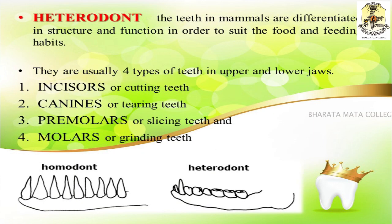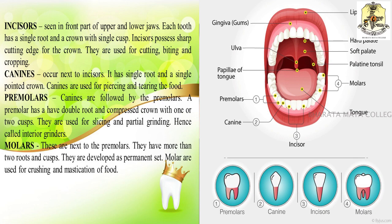Heterodont dentition means the teeth in mammals are differentiated in structure as well as function in order to suit their food and feeding habits. Therefore there are four different types of teeth in the upper and lower jaws: incisors, canines, premolars, and molars. Incisors are the cutting teeth, canines are the slicing teeth, premolars are the grinding teeth, and molars are the mastication teeth. Incisors are seen in the front part of the upper and lower jaws, each having a single root and a single crown with a single cusp, used for cutting, biting, and cropping.